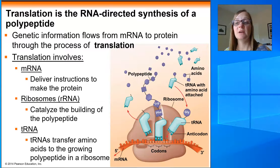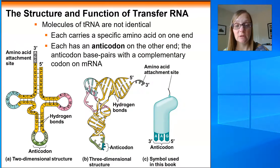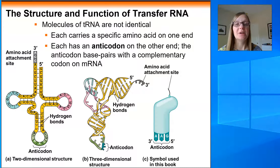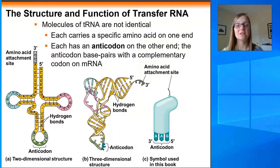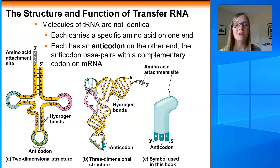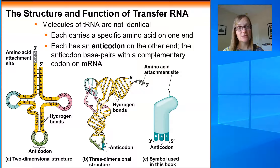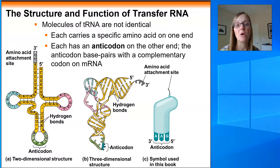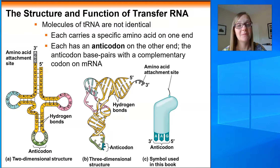We haven't had a chance to talk in detail about tRNAs, so let's take a closer look. Molecules of tRNA are not identical, but each one has two really important parts to its structure. One end of the tRNA carries a specific amino acid, and the other end has what is called an anticodon. The anticodon is complementary to one of the codons within the genetic code, and every anticodon matches with a specific amino acid.